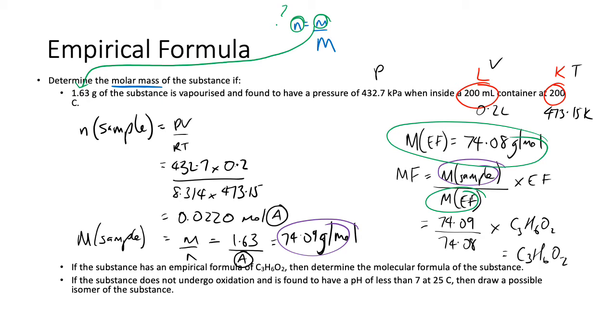Then they give you a little bit more data. So here it does not undergo oxidation and it's found to have a pH less than seven. So the pH less than seven really gives it away as a carboxylic acid. And this just kind of confirms that it's a carboxylic acid. Carboxylic acid was C3H6O2, it'd be something like this. One, two, three, four, five, six. And that makes sense. That will be propanoic acid.